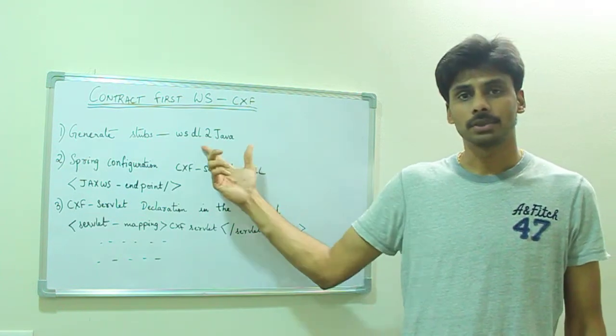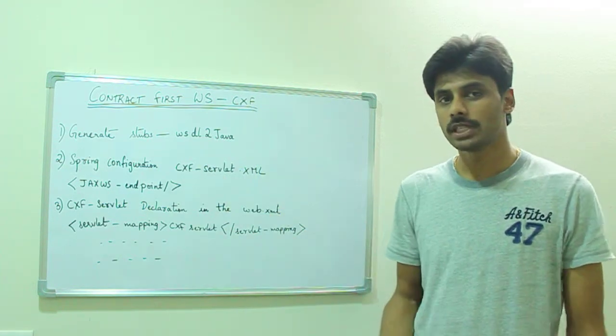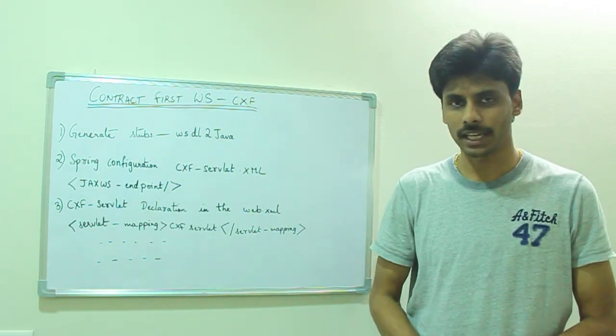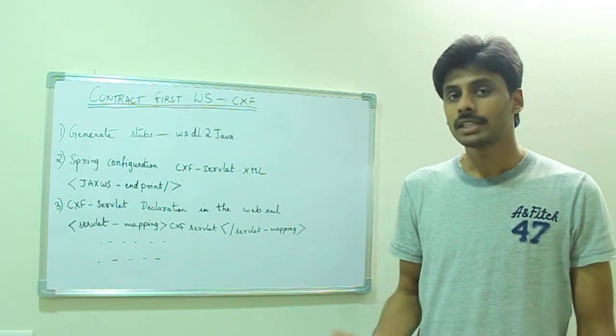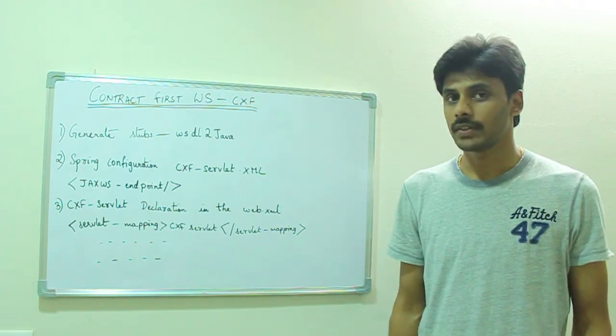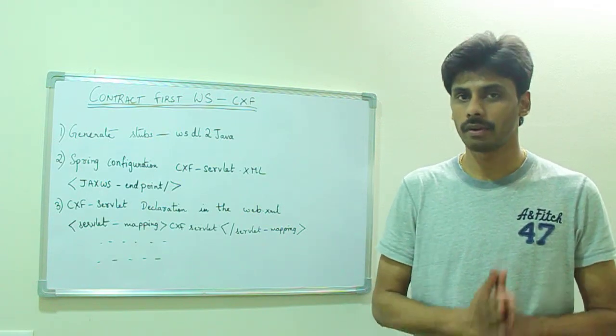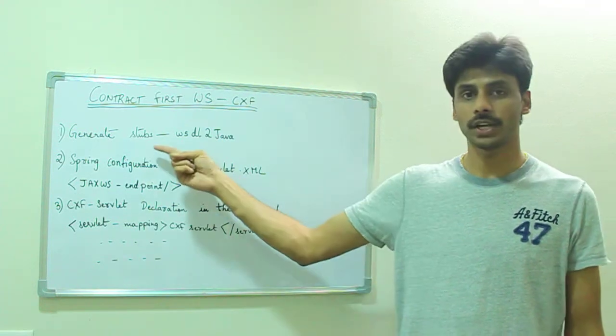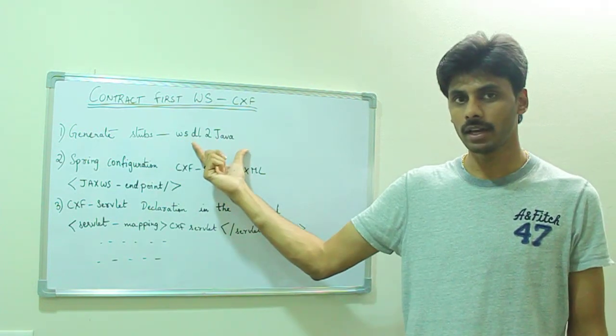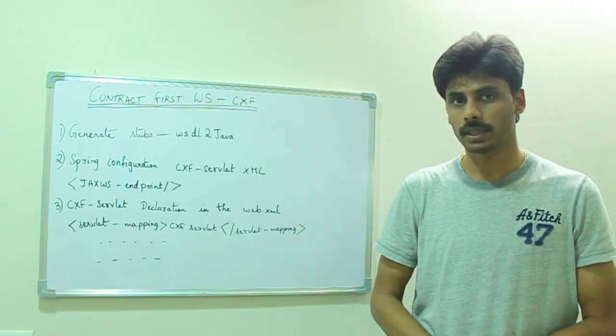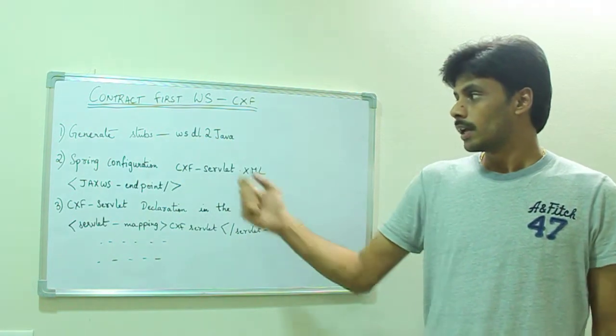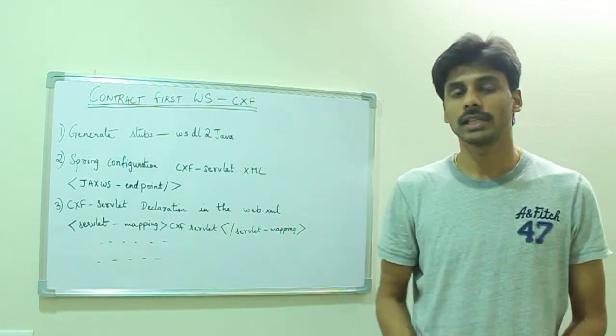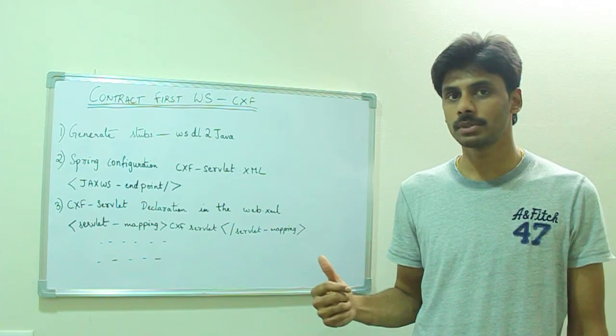We then generate stubs, Java classes from this WSDL file using the WSDL-to-Java tool provided by Apache CXF. One of these stub classes is an interface that is implemented by our Endpoint class. So our Web Services Implementation class will implement an interface that is generated by WSDL-to-Java, in which we write all our Web Services methods. There is also an Ant task - CXF provides us with an Ant task to generate the stubs. We will be using that in the next hands-on presentation.